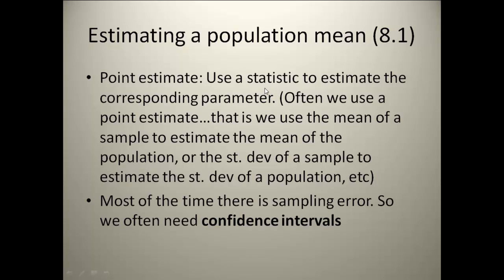Most of the time, there is going to be some sampling error. We have talked about that already before, where when you use a sample to estimate a population, you're probably not going to be right on. There's going to be an error that comes from using just a sample. So what we will do a lot of times is we will come up with a confidence interval.